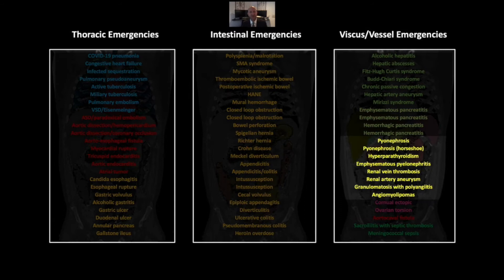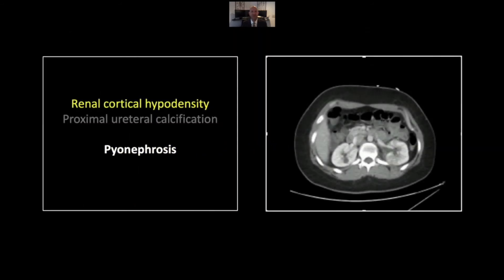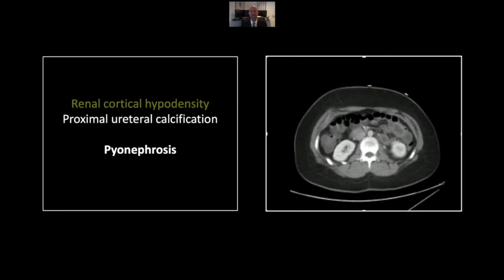Session 8: Renal Emergencies. We'll start with a relatively straightforward case of pyonephrosis, or pyelonephritis, superimposed on stone disease. There is the renal cortical hypodensity so characteristic of pyelonephritis. When you see that, you must make certain that you look for small, subtle stones causing the precipitating obstruction.